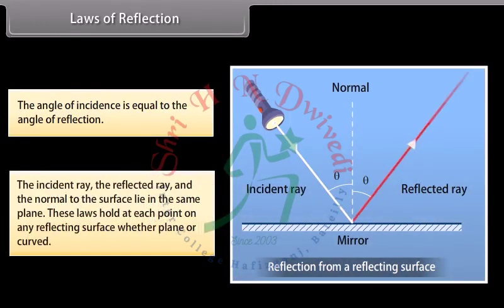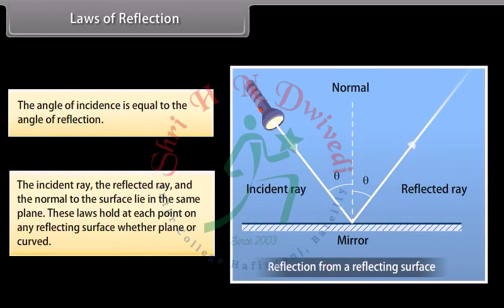The incident ray, the reflected ray, and the normal to the surface lie in the same plane. These laws hold at each point on any reflecting surface, whether plane or curved.